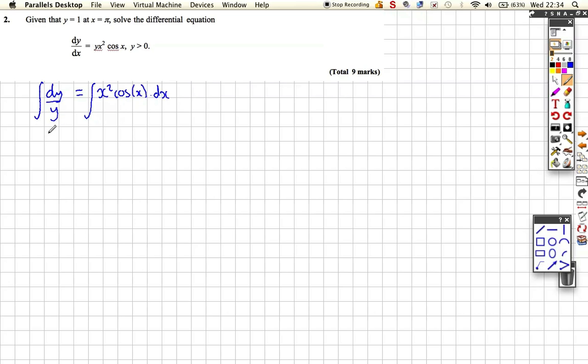Now, the left hand side is easy. The left hand side is just a common pattern you need to spot that you're going to get ln y. The right hand side, however, is a little bit more tricky, and we should spot that it's a product of two different x functions. We've got the x squared function and we've got the cos x function.